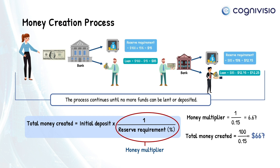It is worth noting that the initial deposit of $100 plays an important role in the economic cycle — it is considered a driver for the creation of the $667. Also note that the smaller the reserve requirement, the greater the money multiplier effect.